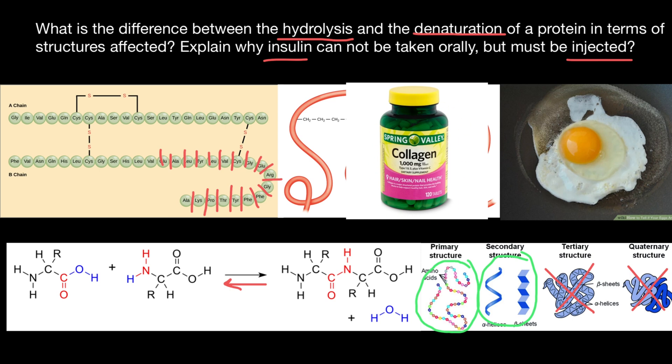Some people may say they took this type of food additive and their nails became better, or their hair and skin started glowing. But I can assure you this is all a placebo effect — and it is a very powerful thing. When you believe in something, you can get a certain effect that is not only psychological but sometimes also physiological. After watching this video, I hope you understand why some medicines can be taken orally and some have to be injected. Thank you for your attention and see you in the next video.